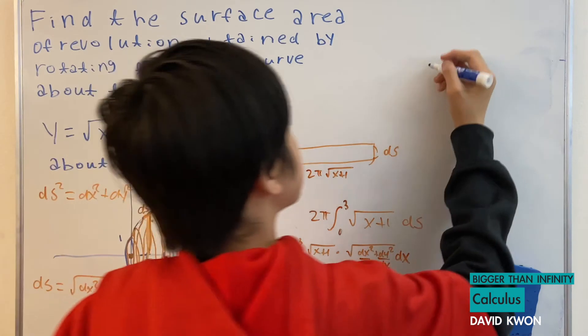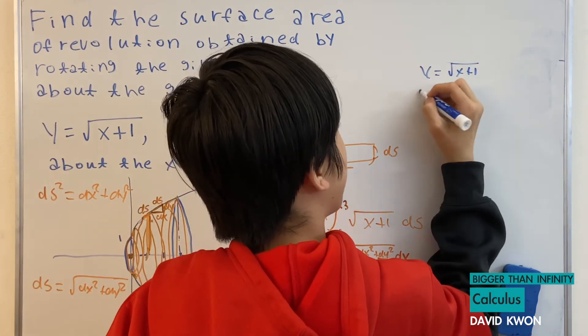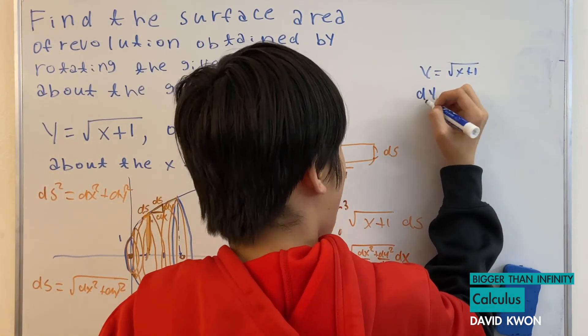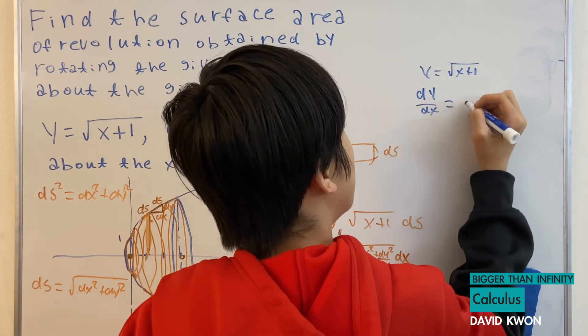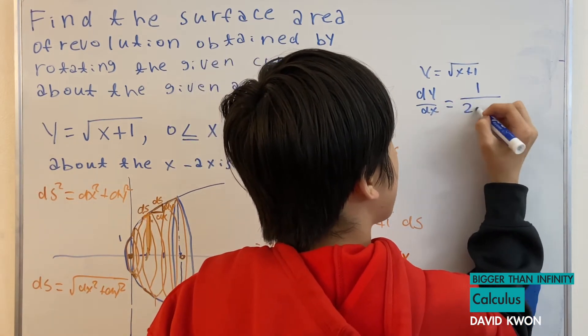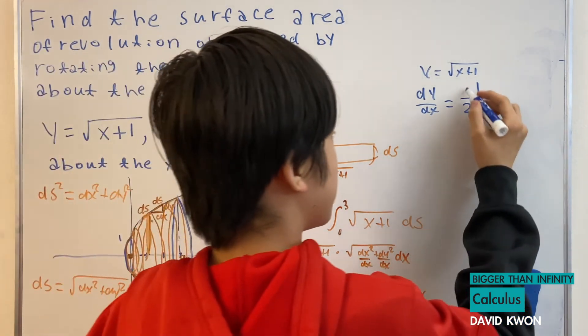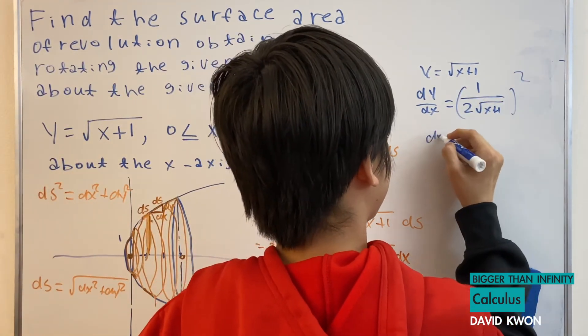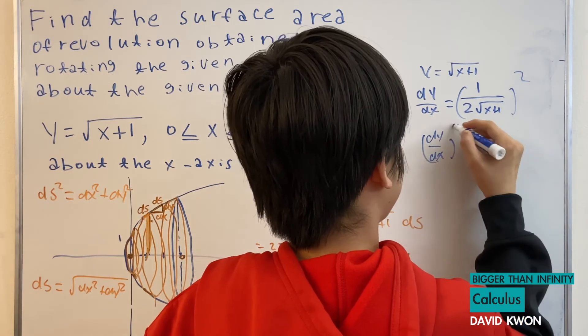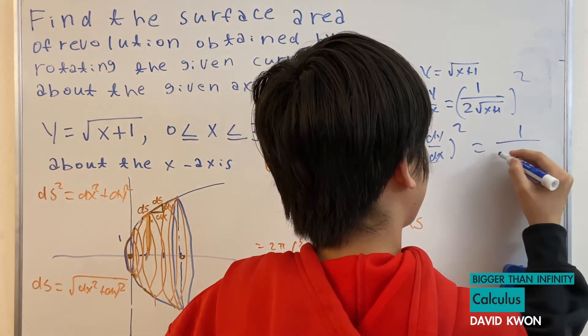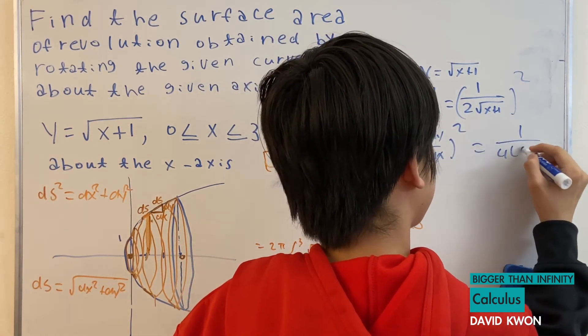Now if I differentiate this, I get dy over dx is equal to 1 over 2 times square root of x plus 1. But I'm going to square that, right? So let's already do that. So this is equal to 1 over 4 times x plus 1.